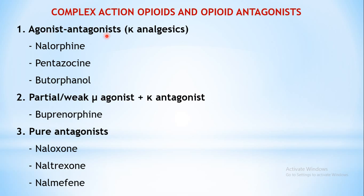The first class is agonist-antagonist. The name itself implies they will act as agonist at some subtypes and antagonist at others. Basically these are called kappa analgesics because the analgesia is mediated through the kappa agonistic property. Examples under this class are nalorphine, pentazocine, and butorphanol.